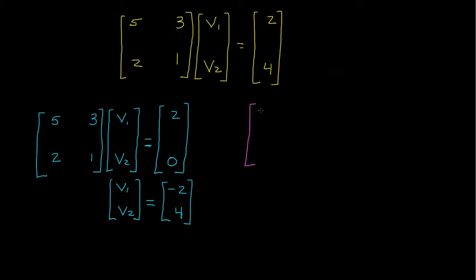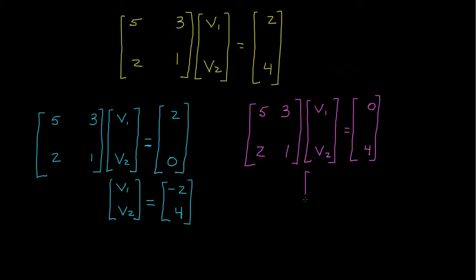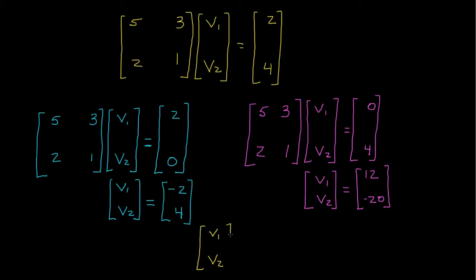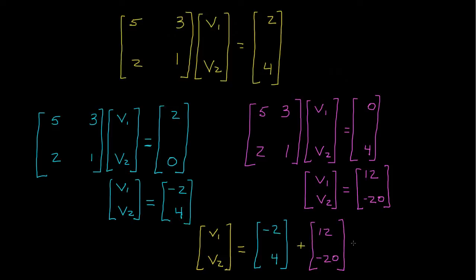Next, I rewrite the system of equations with the known vector as 0 and 4, which is the other part of the decomposition. In this case, solving for v1 and v2 gives values of 12 and negative 20. Now, because (2, 0) and (0, 4) are a decomposition of (2, 4), I can write the solution as the sum of the two decomposed solutions — that is, (negative 2, 4) plus (12, negative 20).